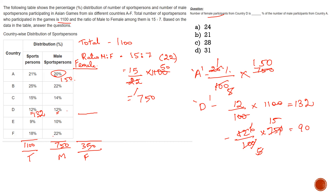The answer for male in country D is 90. When I subtract 90 from 132, I get female participants from country D as 42. The question is: the number of female participants from country D is what percentage of male participants from country A? Female participants are 42, male participants from A are 150.